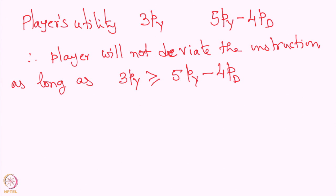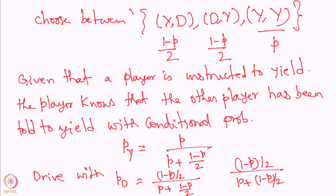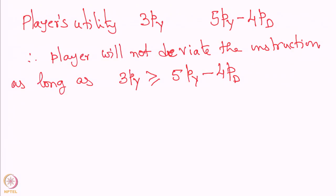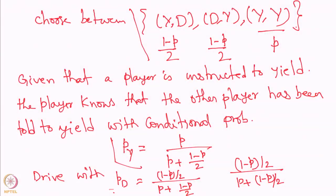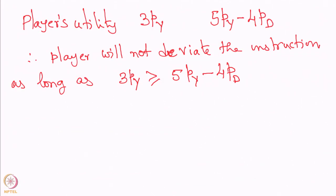The player will not deviate from the instruction as long as 3·p_y ≥ 5·p_y − 4·p_d. If we substitute the values of p_y and p_d and simplify, this condition holds if and only if p ≤ 1/2. One can calculate this very easily — substitute the values of p_y and p_d and you will get that p must be smaller than or equal to 1/2.